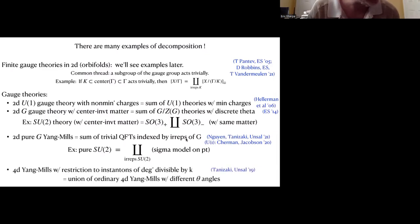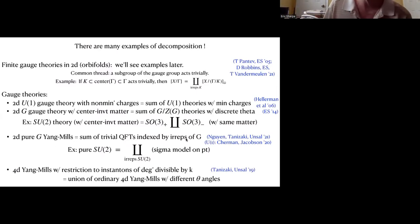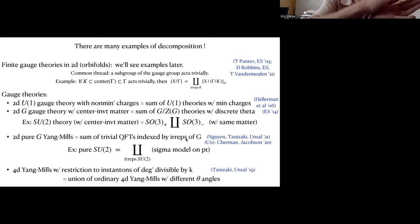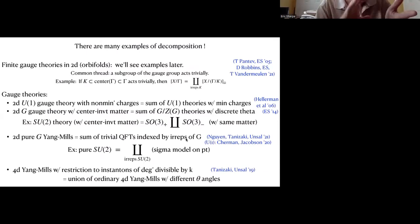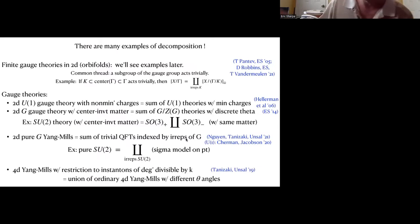For another example, so far I've talked about two-dimensional gauge theories. Here's an example in four dimensions. If I take four-dimensional Yang-Mills and restrict to instantons of degree divisible by K, the result is a union of ordinary four-dimensional Yang-Mills theories but with different theta angles. So I have multiple different Yang-Mills theories in which the theta angles between each are rotated in such a way that the sum of those theories cancels out instantons of the wrong degree.